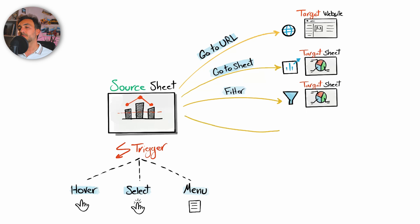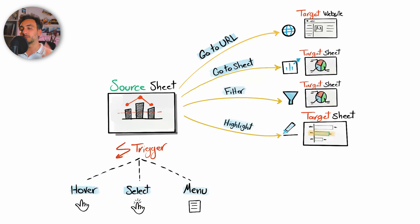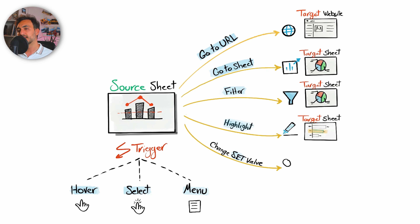Anything you are clicking on the source sheet is going to impact the filter in the target sheet. Then we have the Highlight action — here again we have a source and target sheet, and any action on the source sheet is going to be highlighted in the target sheet without filtering the data. So Go to Sheet, Filter, and Highlight always require you to specify both the source sheet and the target sheet.